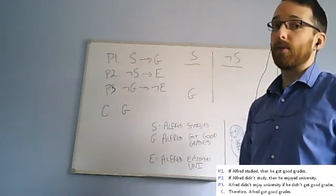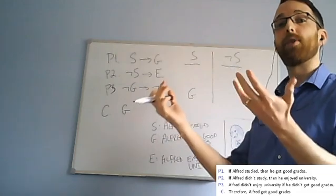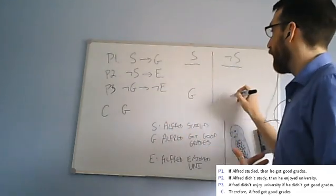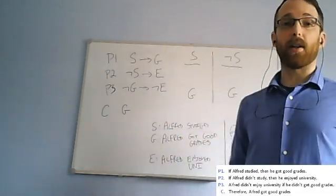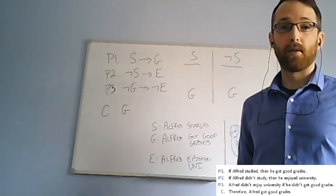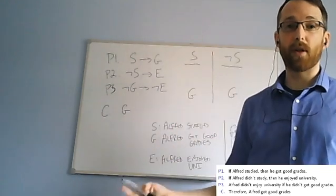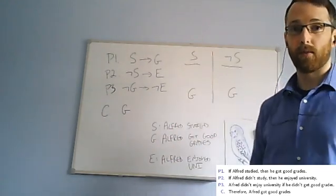My strategy is going to be to say, I'm going to look at each of these cases. If I assume S is true, then G has to be true. So if I assume he studied, then he got good grades. And also, if he didn't study, he still must have got good grades. And I know we're in one case or the other, so then he must have got good grades, period.